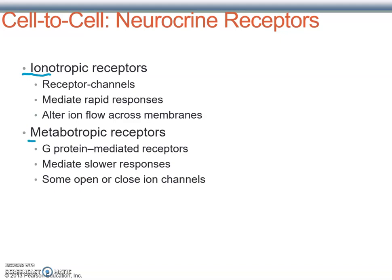Metabotropic receptors are G-protein coupled receptors. They produce a slightly slower response because G-protein coupled receptors work through a G-protein. Once the receptor is activated, the G-protein activates its next-door neighbor — which could be adenylate cyclase, phospholipase C, or another target. Because there are multiple steps before a response, it is typically slower, but we often get signal amplification where a small signal produces a huge output.